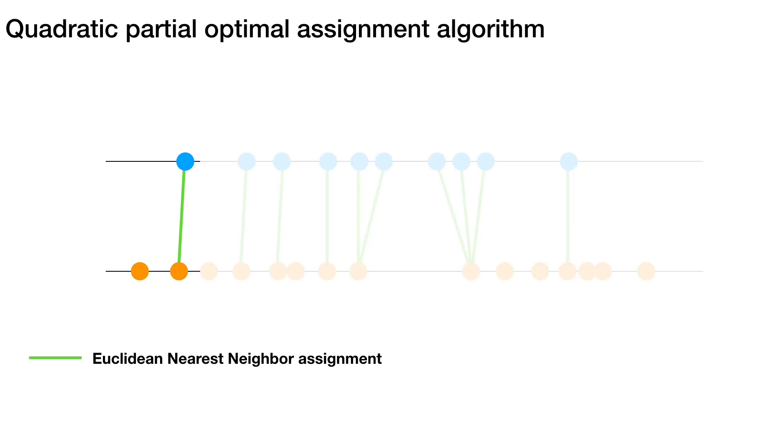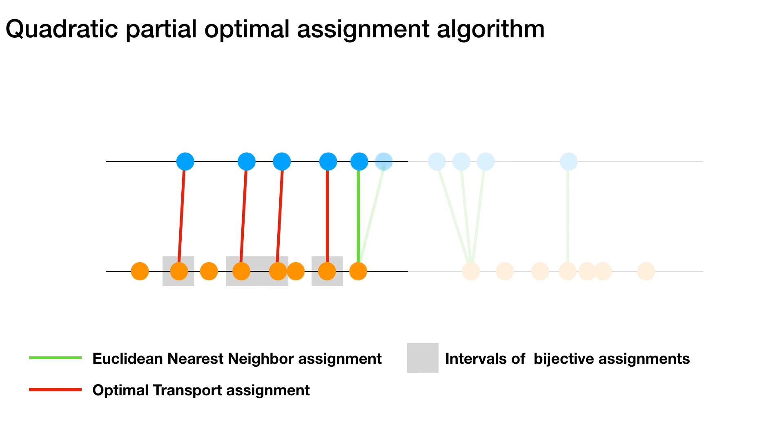Here, in the first sub-problem involving one single point, the optimal solution is to match it to its nearest neighbor. Similarly, considering now the first two points, their nearest neighbors are different so they also yield an optimal transport solution. And similarly for the third, fourth and fifth points.